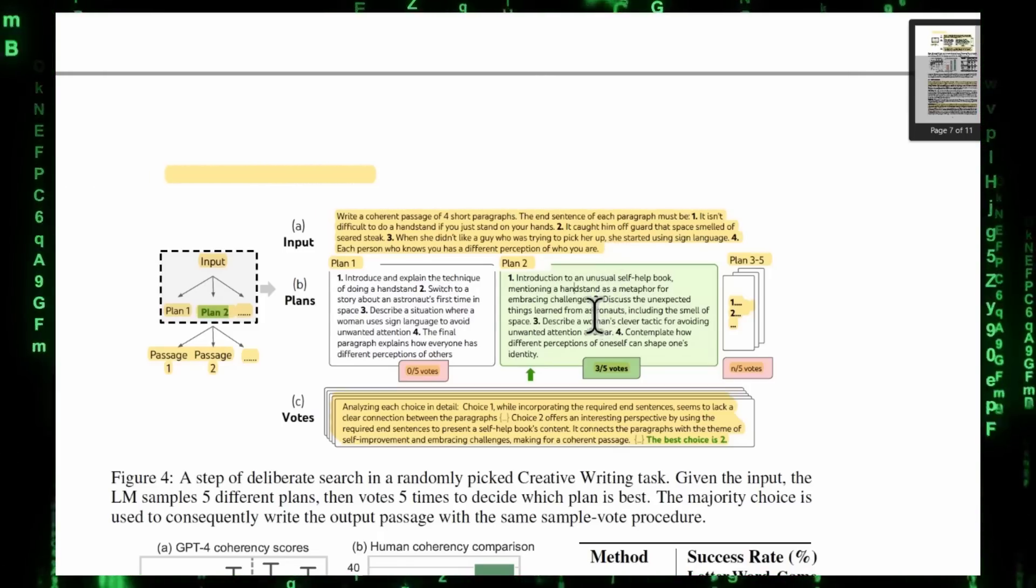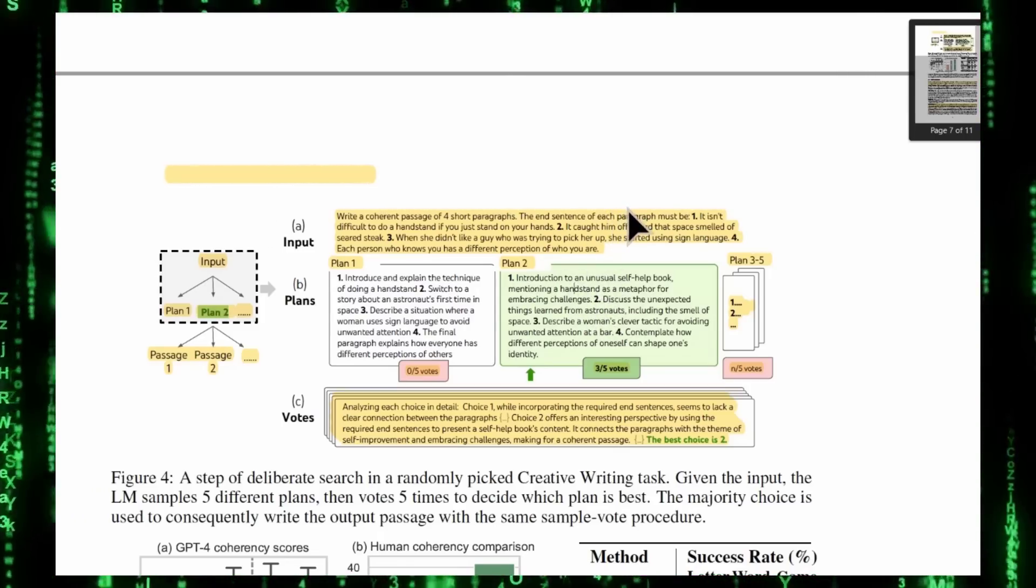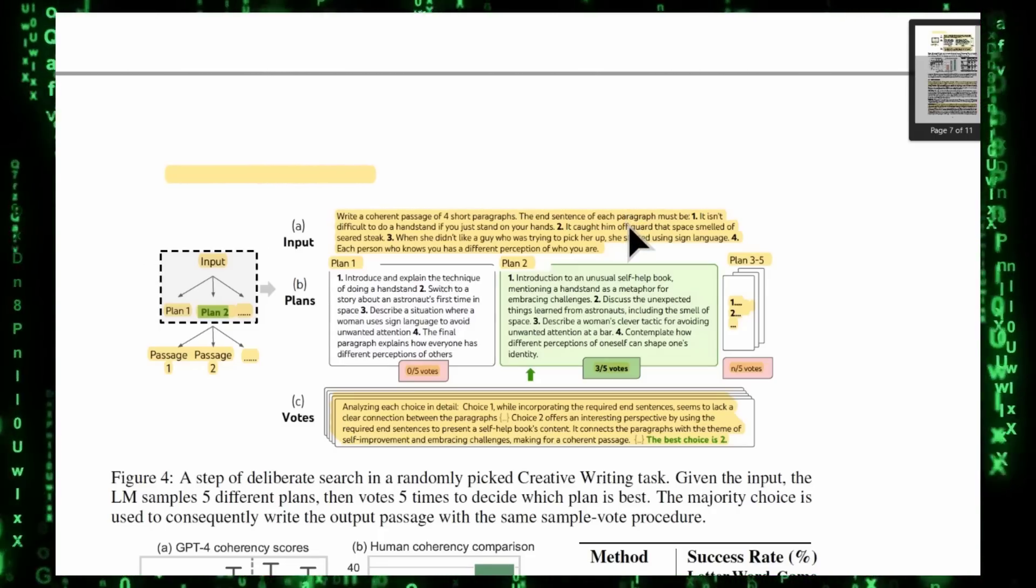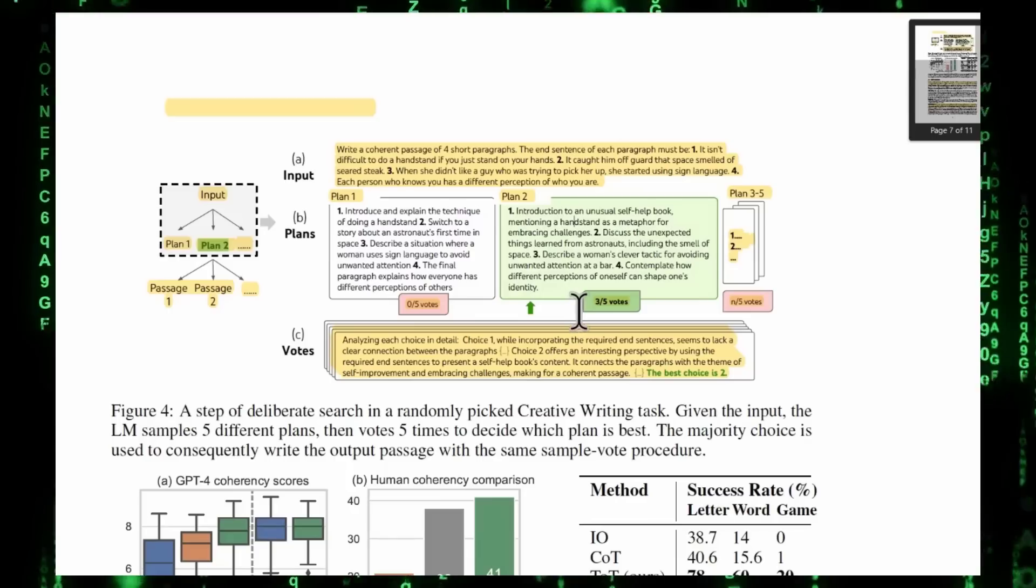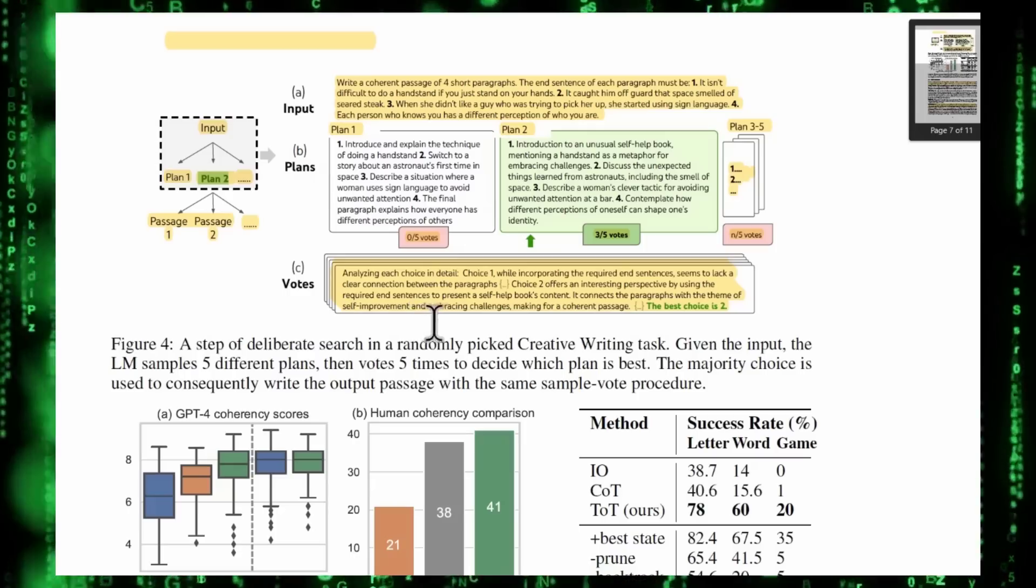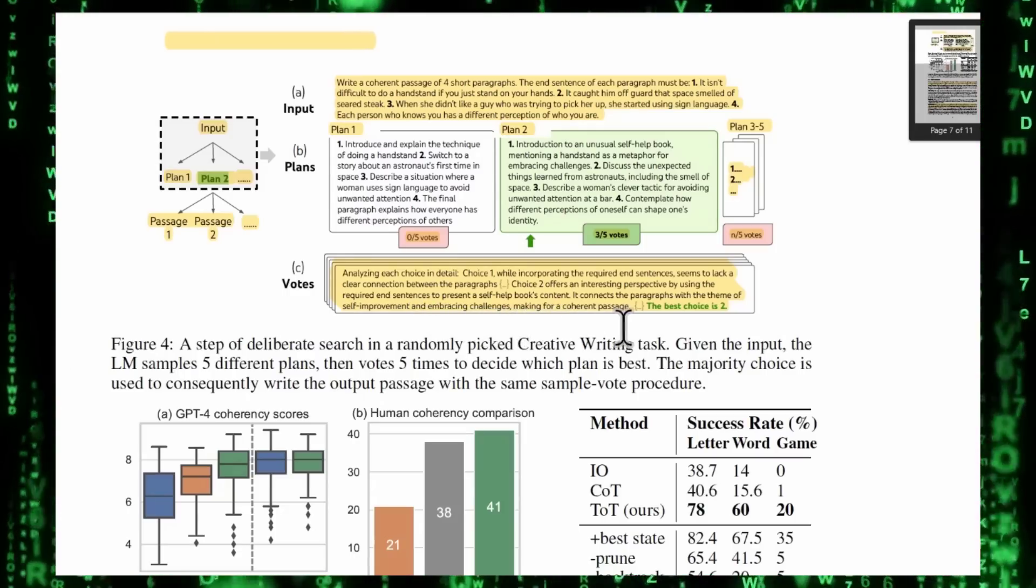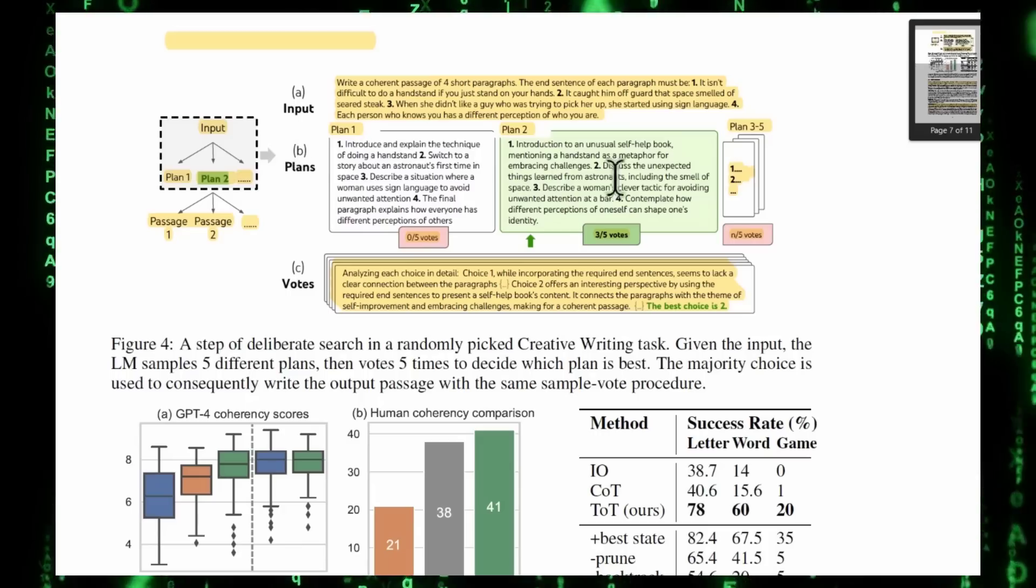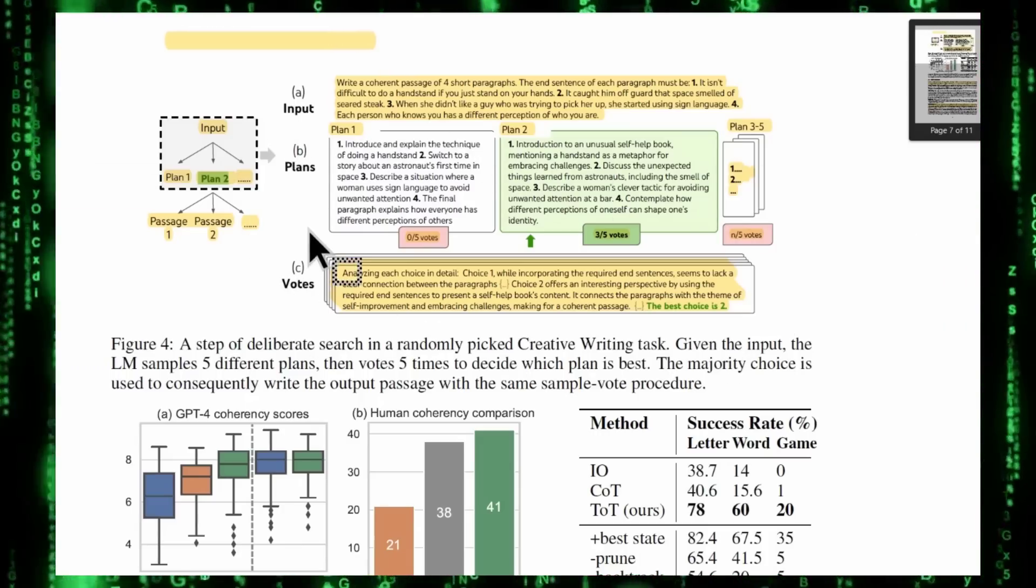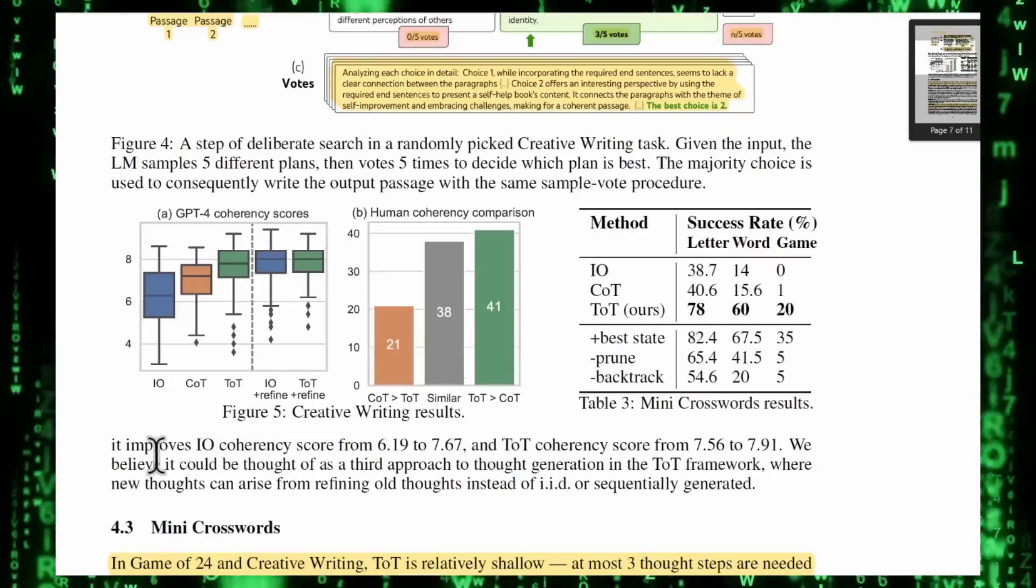Then a woman's clever tactics, so again, challenges. And contemplate how different perceptions of oneself can shape one's identity. That's pretty smart, I gotta say. It connects the paragraphs with a theme of self-improvement and embracing challenges, making for a coherent passage. So it takes the inputs, it plans out multiple different plans that it can do, it votes on which plan is the best, and only then does it actually produce the final results.